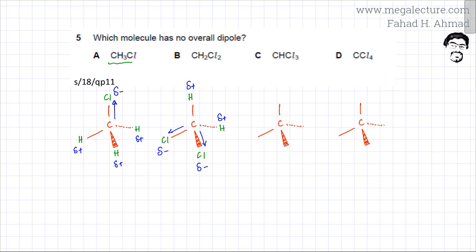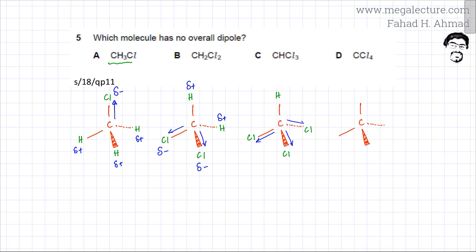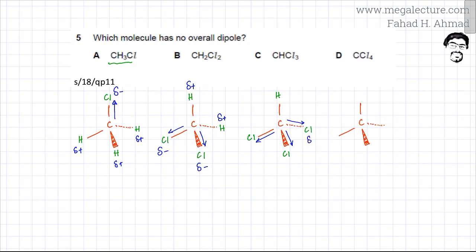Moving to the third molecule, CHCl₃, you have only one hydrogen and three chlorines. All three chlorines are pulling the electrons downwards — this chlorine pulls towards it, this one attracts electrons towards you, and this one goes into the page — but overall the effect is all three chlorines dragging the electrons downwards. The chlorines will have a partial negative charge, while the hydrogen gets a partial positive charge.